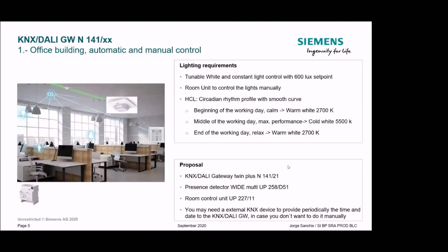Let's start with the first use case. This is a typical office building where we want automatic and manual control of the lights. The lighting requirements are: tunable white is needed, constant lighting control with a setpoint of 600 lux, and a room unit to control the lights manually. Regarding human-centered lighting, it is required to have a circadian tunable white profile with a smooth curve.